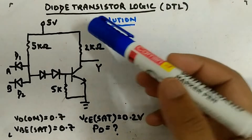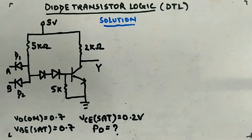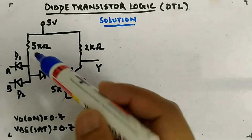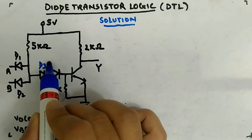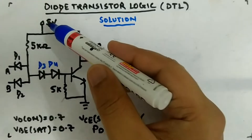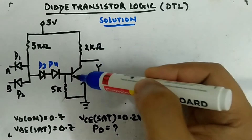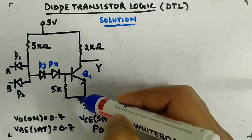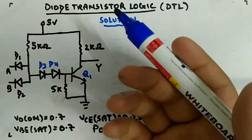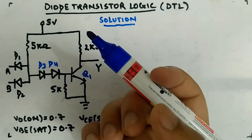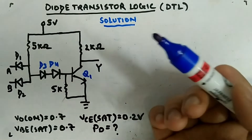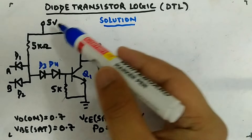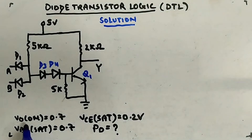Let's look at a question on diode transistor logic. I have taken two diode arrangement here — D3 and D4. There's a 5 volt supply, 5 kilo ohm and 2 kilo ohm resistors, a transistor Q1, and a 5 kilo ohm resistor serving the application of sucking charge off from the base, which helps in faster switching. D1 and D2 are inputs A and B, where you are applying the voltages.